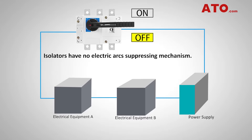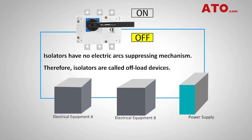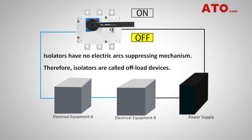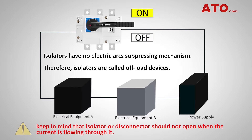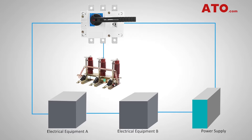Unlike circuit breakers, isolators lack the mechanism to suppress the electric arcs that happen when high currents are interrupted electrically. Isolators will not break and make currents — instead, they will completely isolate currents. So keep in mind that an isolator or disconnector should not be opened when current is flowing through it. They may be paired with an earthing switch to ground the portion that has been isolated from the system, ensuring the safety of equipment and personnel working on it.